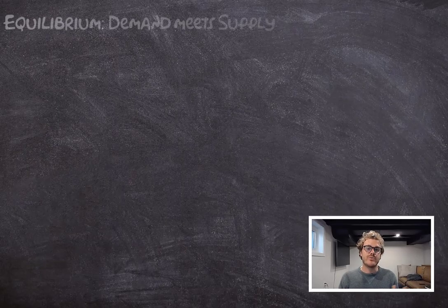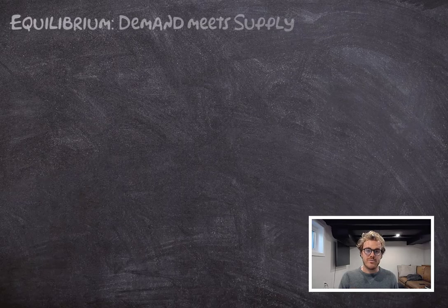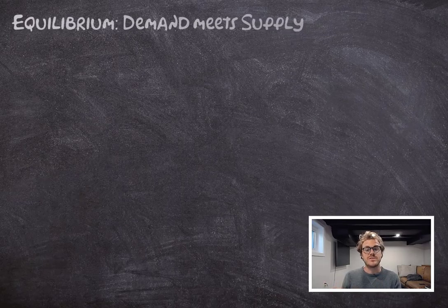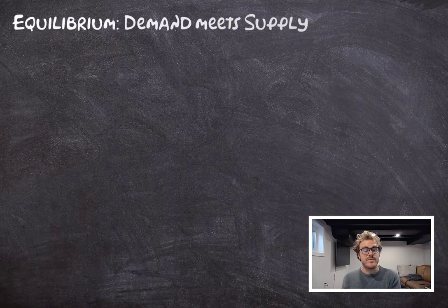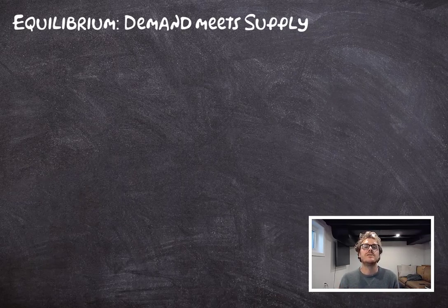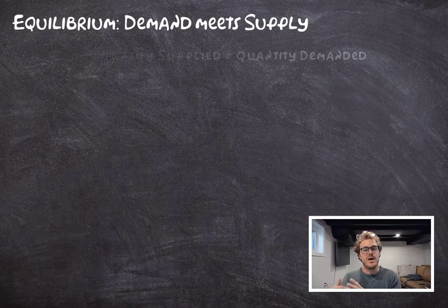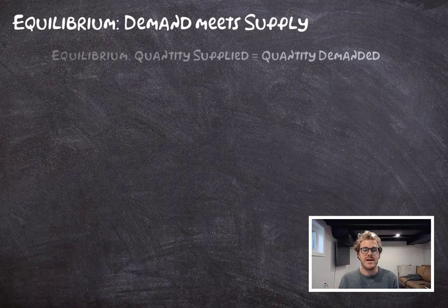Now that we've looked at the buyer side of the market through the demand curve and the seller side of the market through supply, we can bring them together to look at the market as a whole. In particular, we can look at something called equilibrium. Equilibrium is going to be the price where quantity supplied equals quantity demanded.